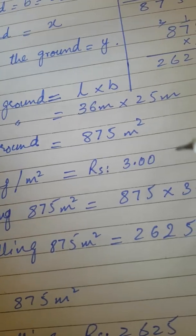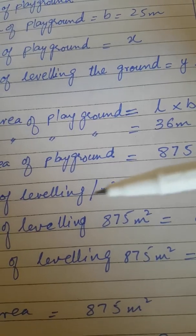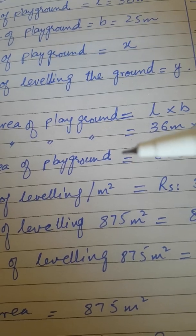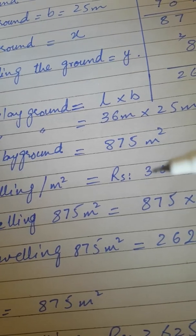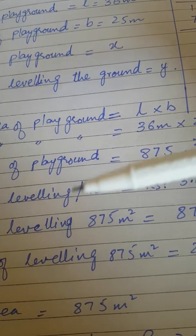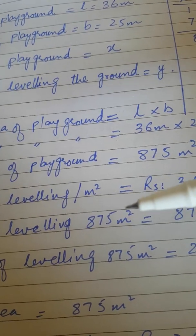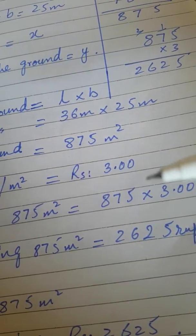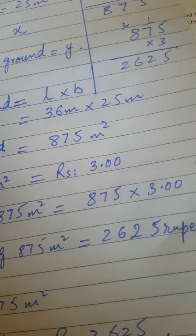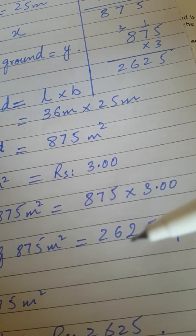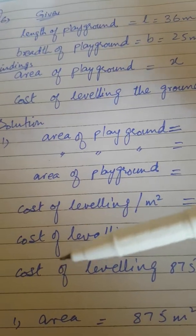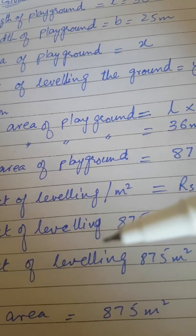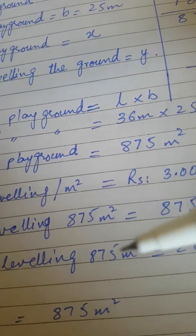The cost of leveling per meter square is given as rupees 3. This means when 1 meter square area is leveled, the cost is 3 rupees. So for a total area of 875 meter square, by multiplying 875 by the cost of 1 meter square, you get the total cost of leveling the entire area.